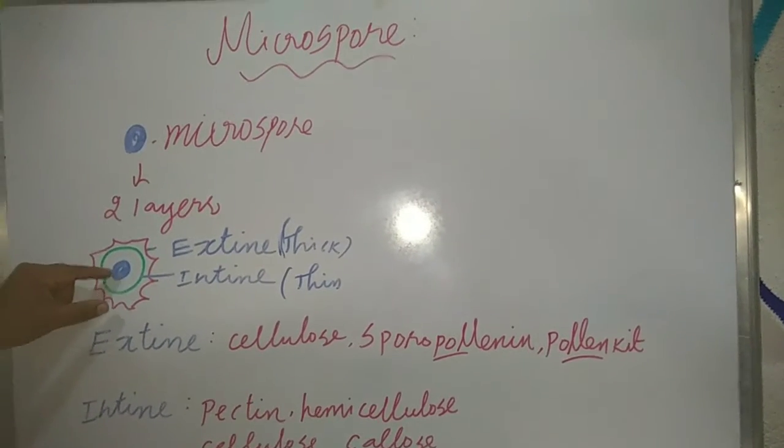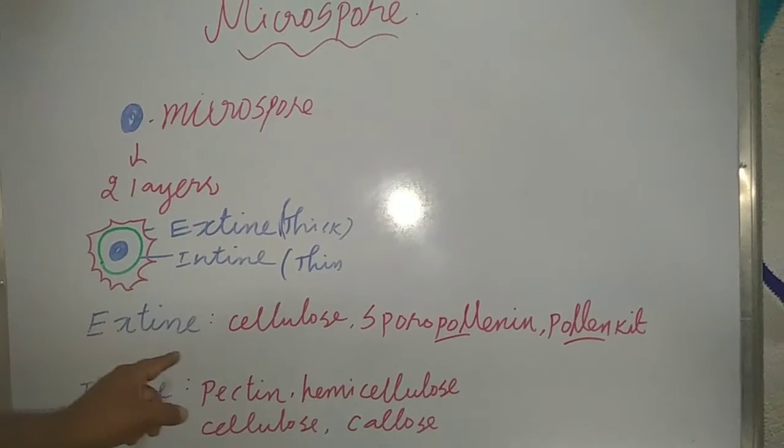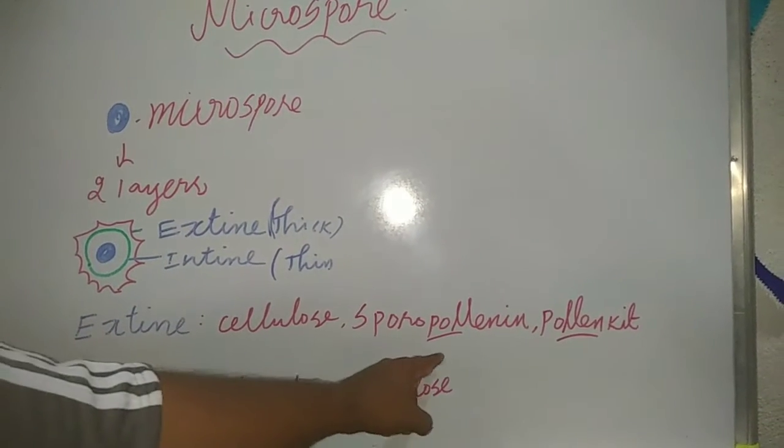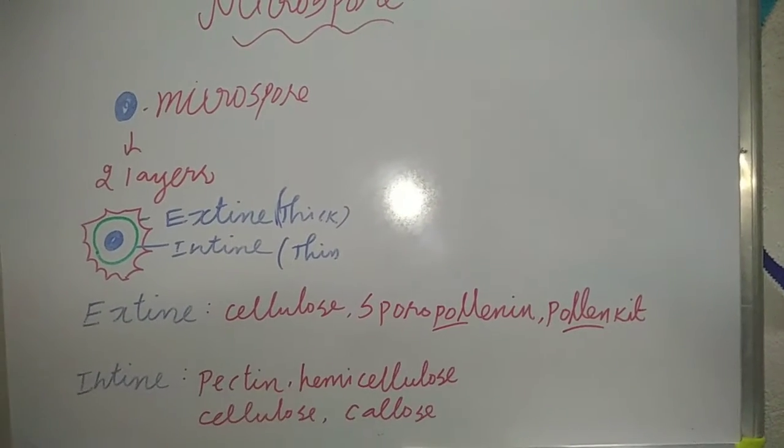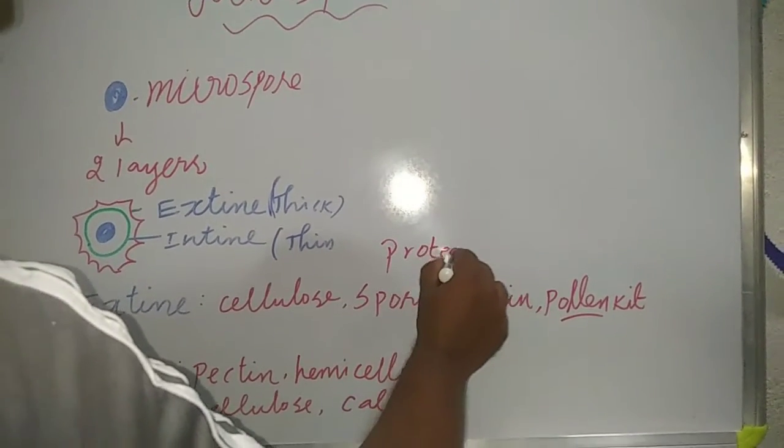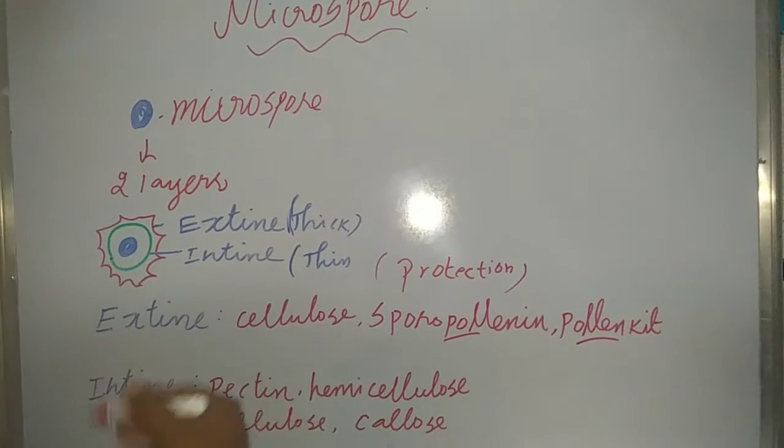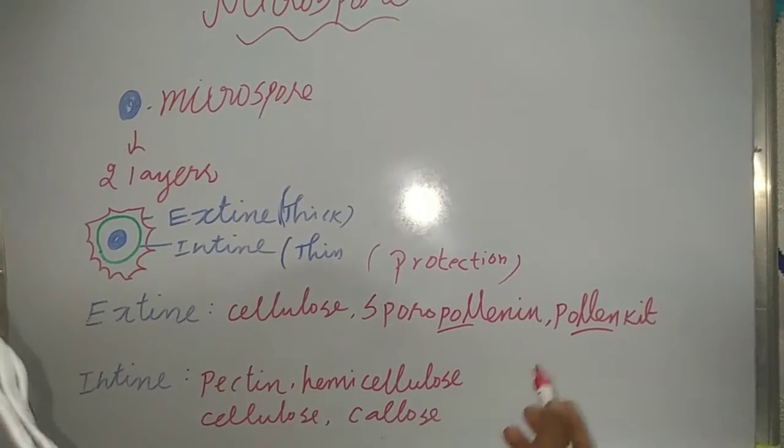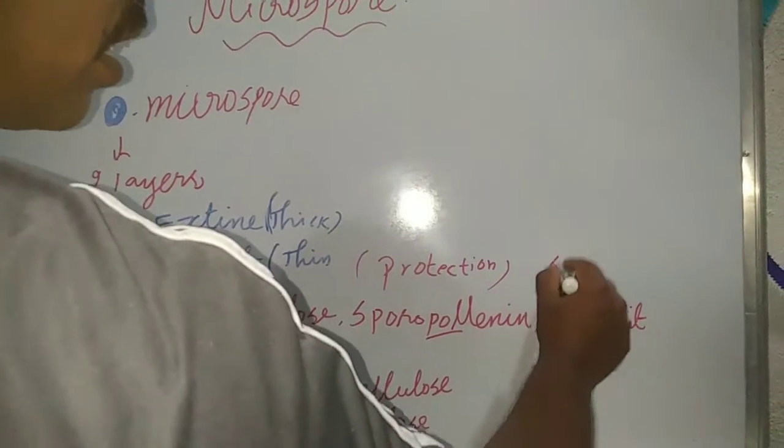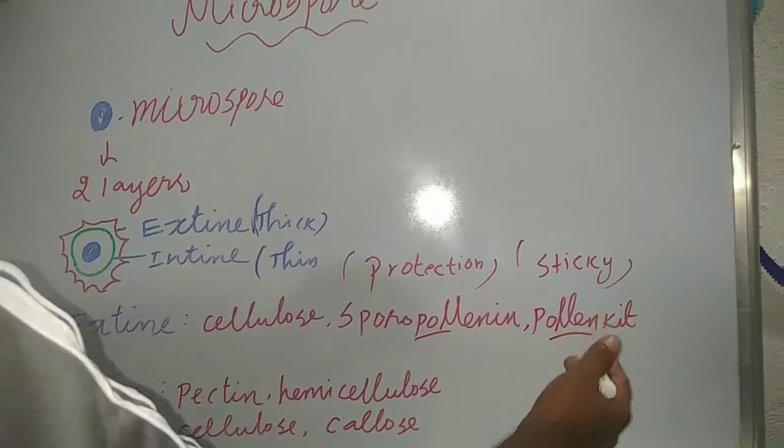Under the exine, what chemical components are present? Cellulose, sporopollenin, and pollen kit. The sporopollenin is used for protection of the pollen grain. The next, pollen kit is used for insect pollination with sticky nature. It easily catches insects and moves from place to place.